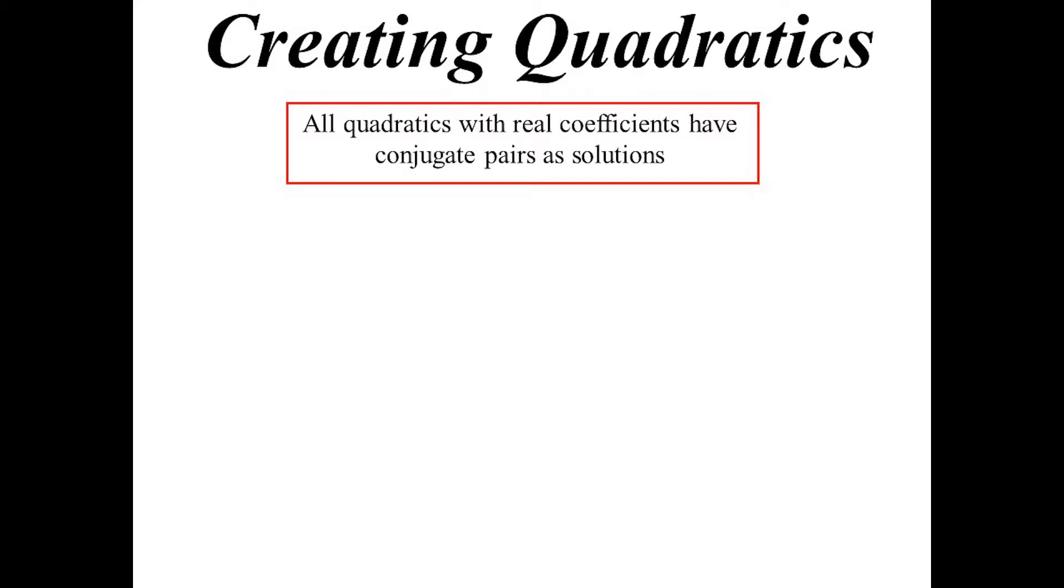Still a quadratic equation. But if we've got ones that we're used to seeing, where all the coefficients are real, then the solutions must appear in conjugate pairs. Because you're going to get plus or minus the square root of something i. So you'll always get conjugates.